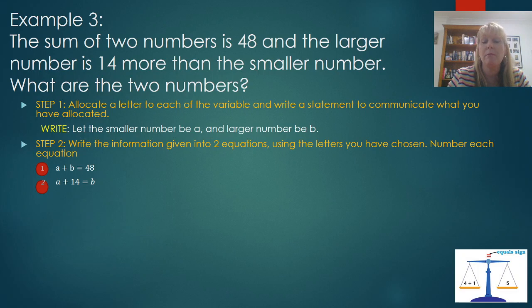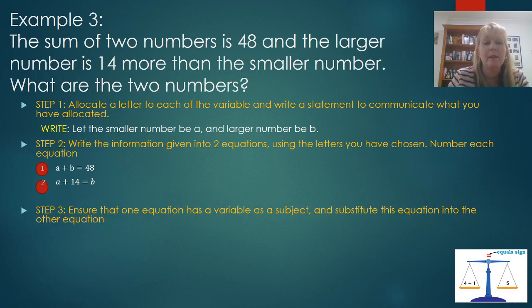Step two, you're going to change that information that's in the question into two equations using those two letters you've chosen. And you're going to number those two equations. So reading the questions, the sum of two numbers, sum gives me a clue, plus. So those two numbers, A plus B that I created is going to come to 48. That's how I've got my first equation. The larger number is 14 more. So 14 more tells me plus 14. Well, 14 more than the small number gives me the big number. So the smaller number is A. A plus 14 is going to be equal to B. So now we can start to do solving the equation. Now notice equation two has B as the subject. That's because we want one of the variables to have itself as a subject so we can substitute that back into the other equation. If we had a case where we knew that A plus B was 48 and then A take away B was another number, we'd have to rearrange one of the equations to make a subject for us to substitute into the other equation. But thankfully, we've got that step done for us.